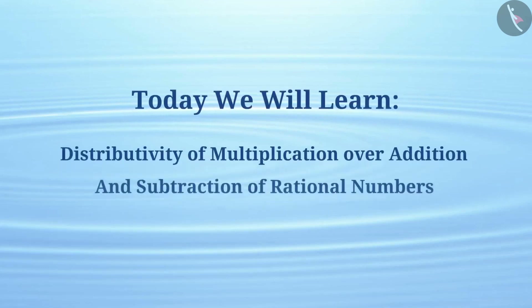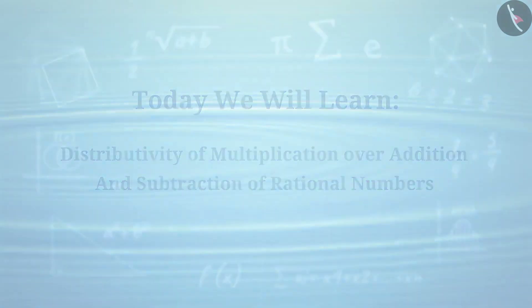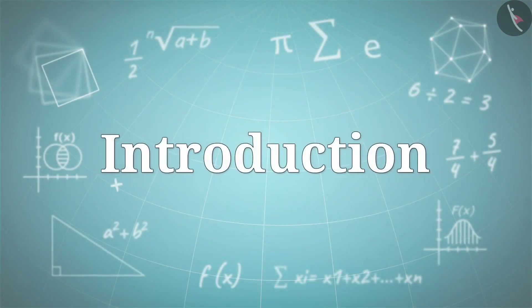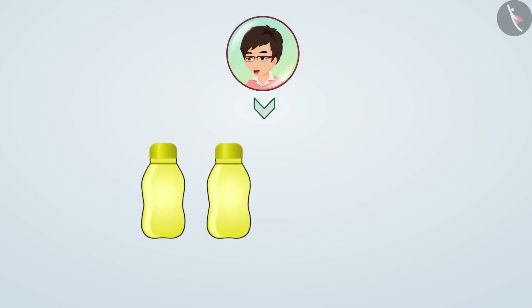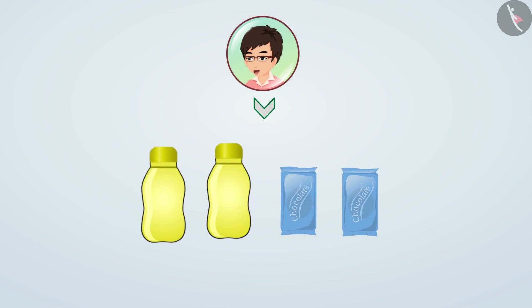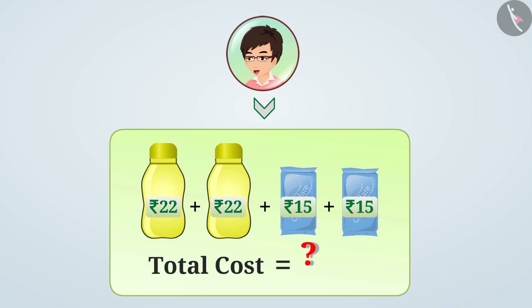Today we will learn distributivity of multiplication over addition and subtraction of rational numbers. Consider: Nishant buys two identical bottles of juice and two identical chocolates from a shop. If a juice bottle costs 22 rupees and a chocolate costs 15 rupees, what will be the total value of all the items?